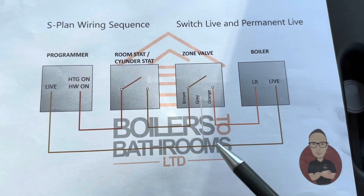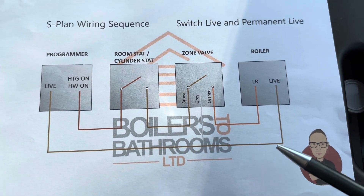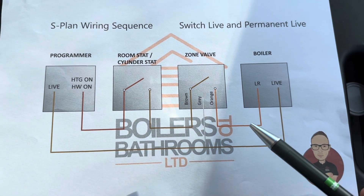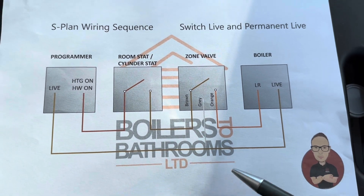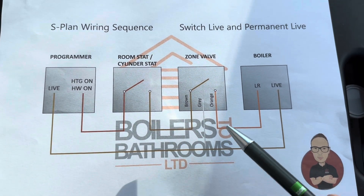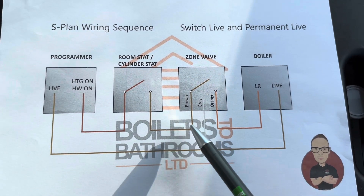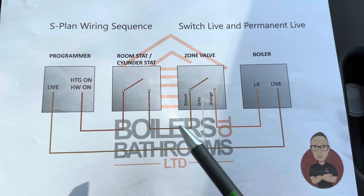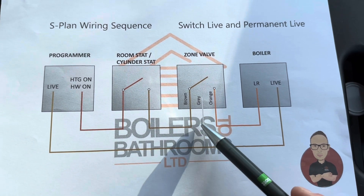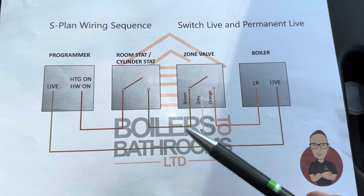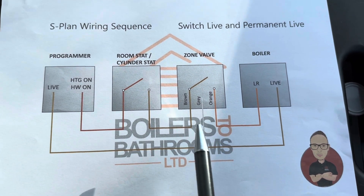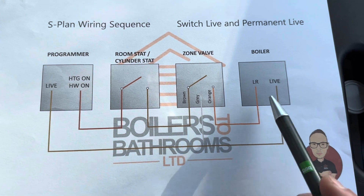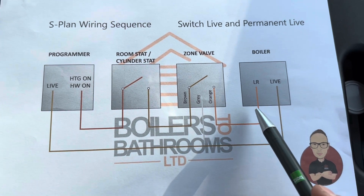With breakdowns it's all about localizing the area you're going to work in. The point of going to the 10-way is that it's almost like a mid-section — you can test to see whether we're going one way to check external controls or the other way to check the boiler. So: is it a boiler fault or is it an external controls fault?